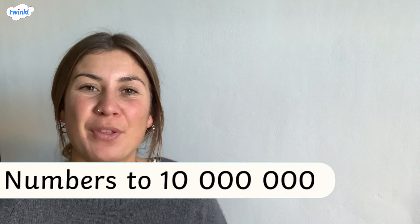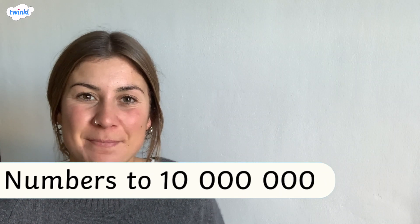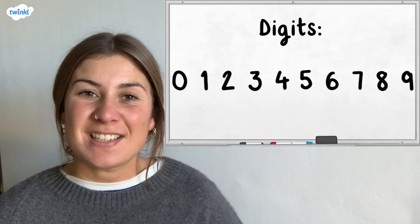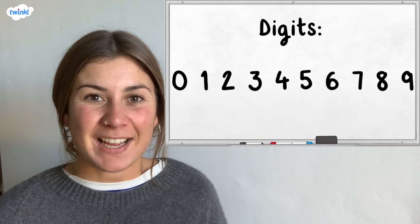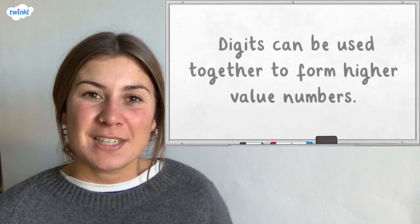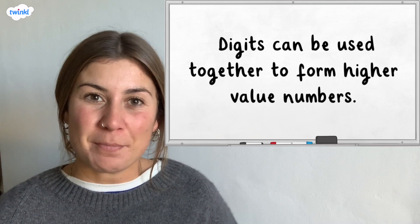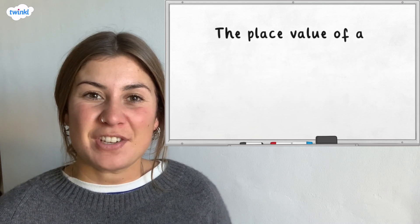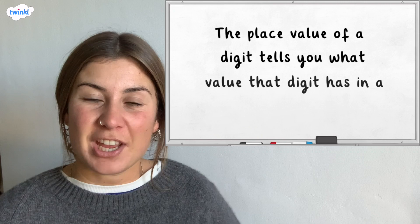Hi, this video is here to help you with understanding numbers up to 10 million. A digit is a single number from 0 to 9. Digits can be used together to form higher value numbers. The place value of a digit tells you what value that digit has in the number.